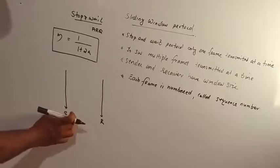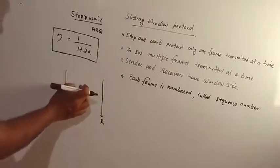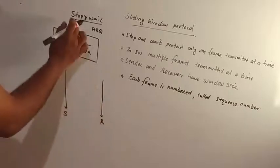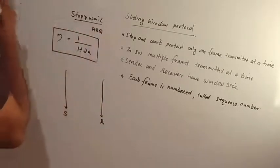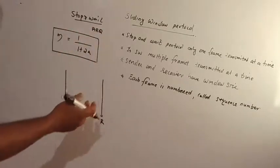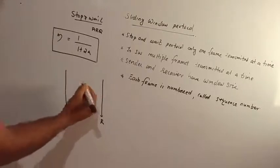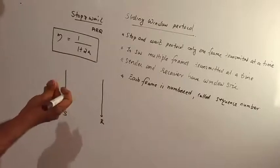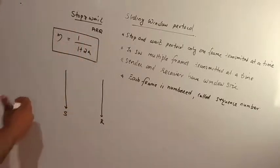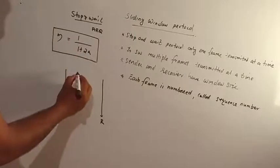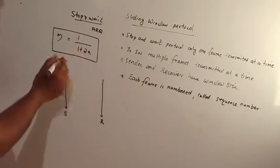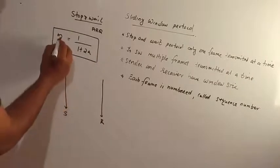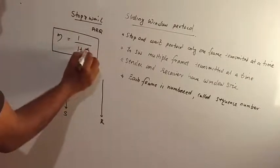Look at the stop and wait protocol. We have to calculate the efficiency of the stop and wait protocol, and we have to go into the sliding window protocol. We can calculate the efficiency using the equation 1 divided by 1 plus 2a.